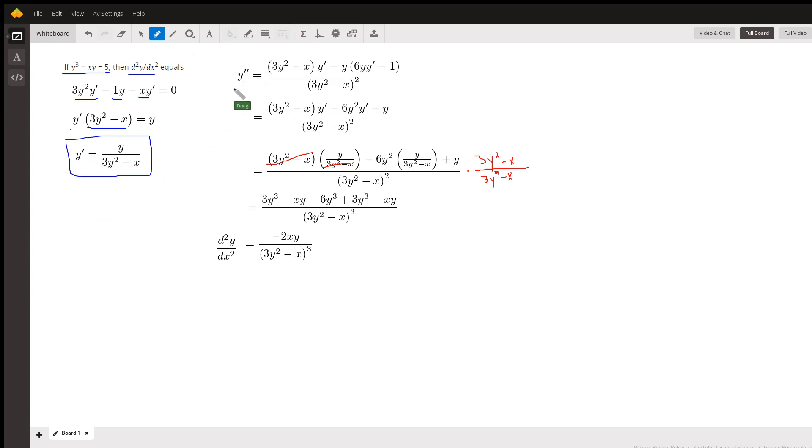To get y double prime we need to use the quotient rule. So there's the denominator times the derivative of the numerator minus the numerator times the derivative of the denominator, which is 6y y prime minus 1 over the denominator squared.